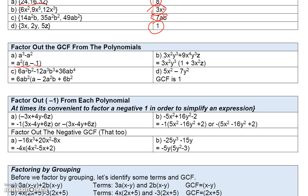For 3x²y³ + 9x⁴y³z, the GCF of 3 and 9 is 3; the GCF of x² and x⁴ is x²; and the GCF of y³ and y³ is y³. There's no z in the first term, so z is excluded. Dividing 3x²y³ by 3x²y³ gives 1, and dividing 9x⁴y³z by 3x²y³ gives 3x²z. So the factored form is 3x²y³(1 + 3x²z).